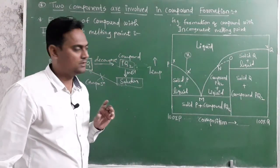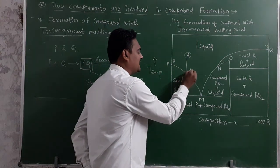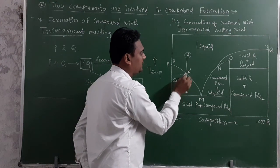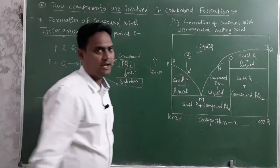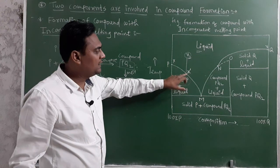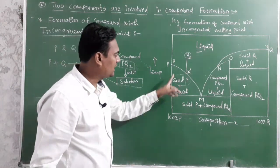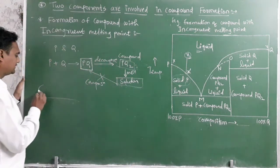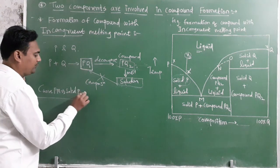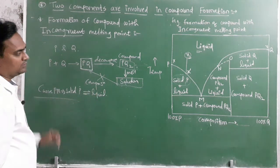If a liquid having a particular composition X is cooled down, at point X-dash the solid component P separates out from the liquid. The liquid has composition X, and at point X-dash, solid P begins to solidify. Along the curve PM, solid P and liquid are in equilibrium.